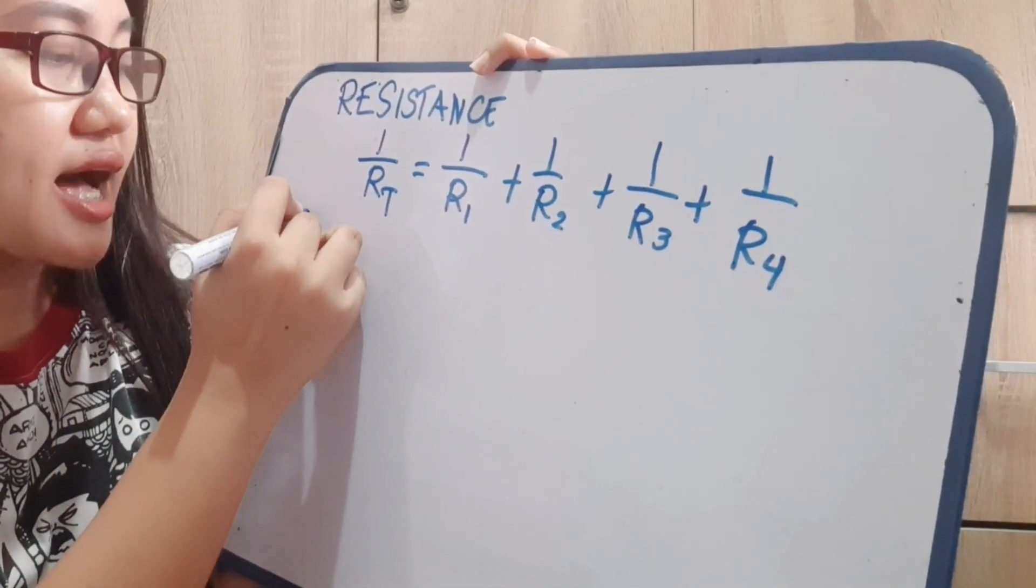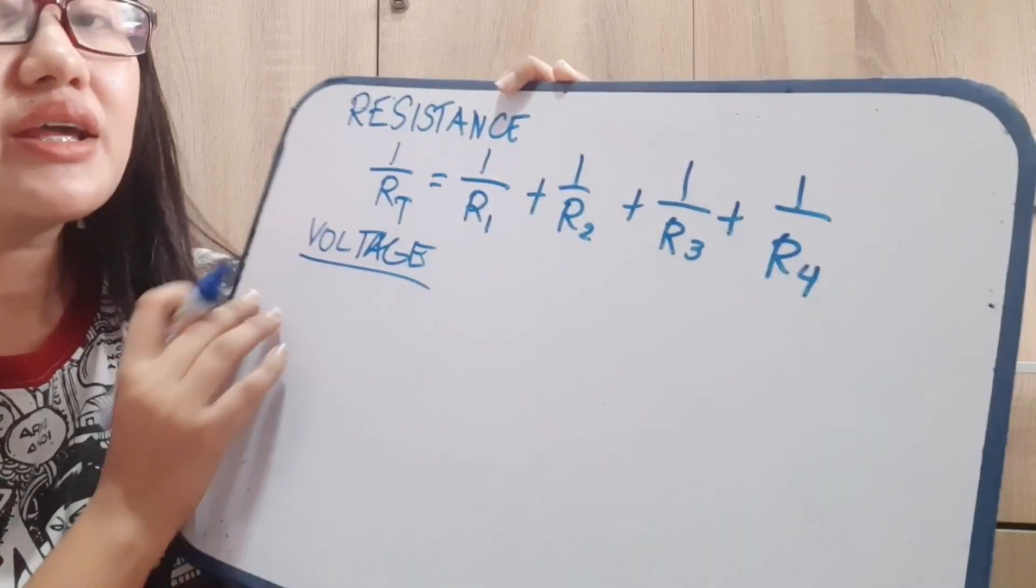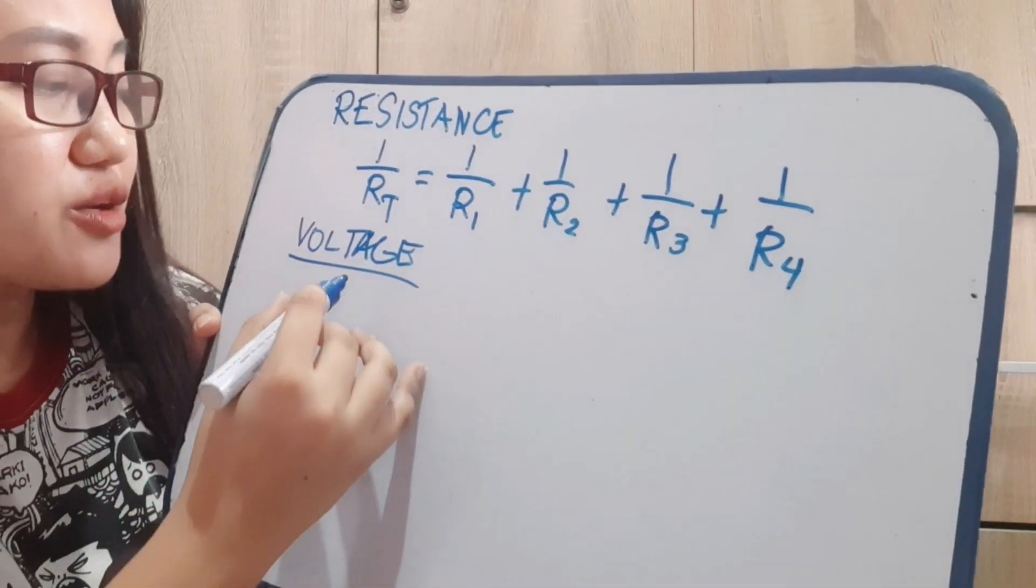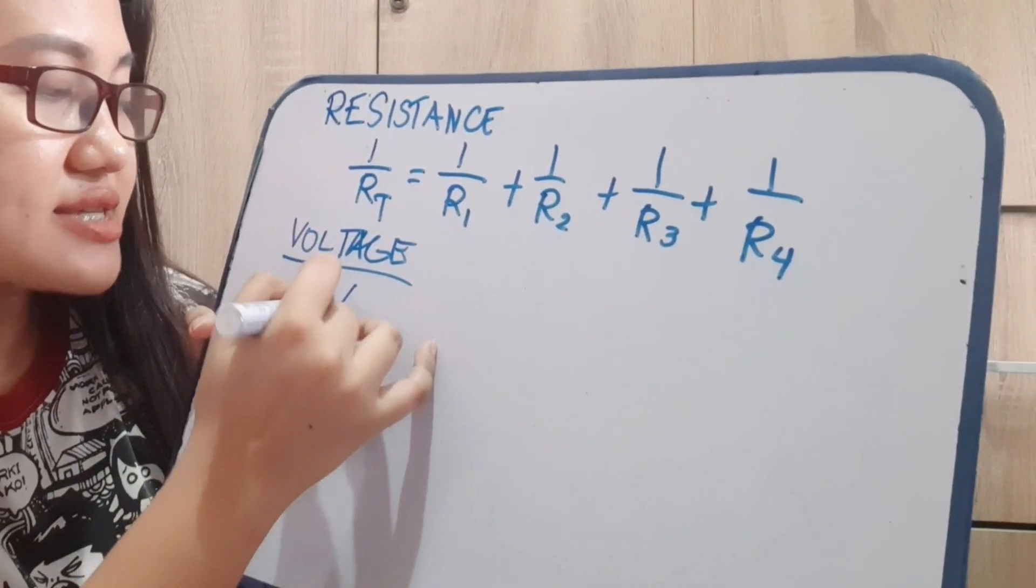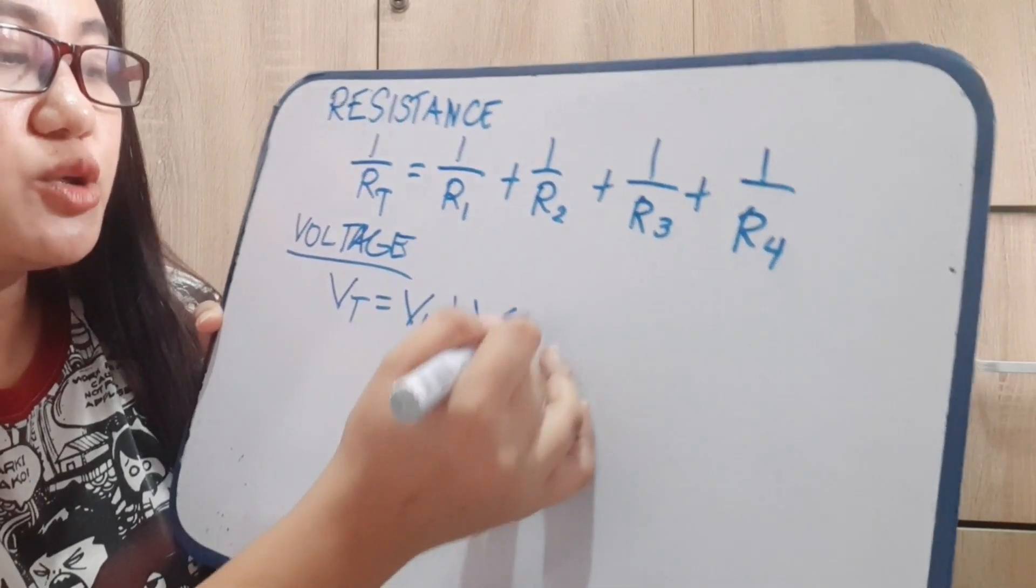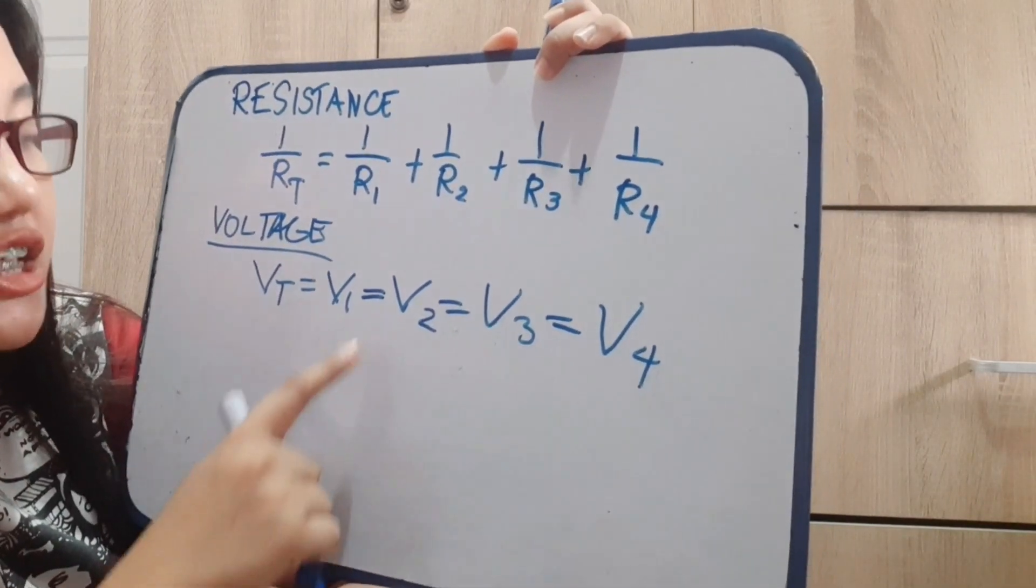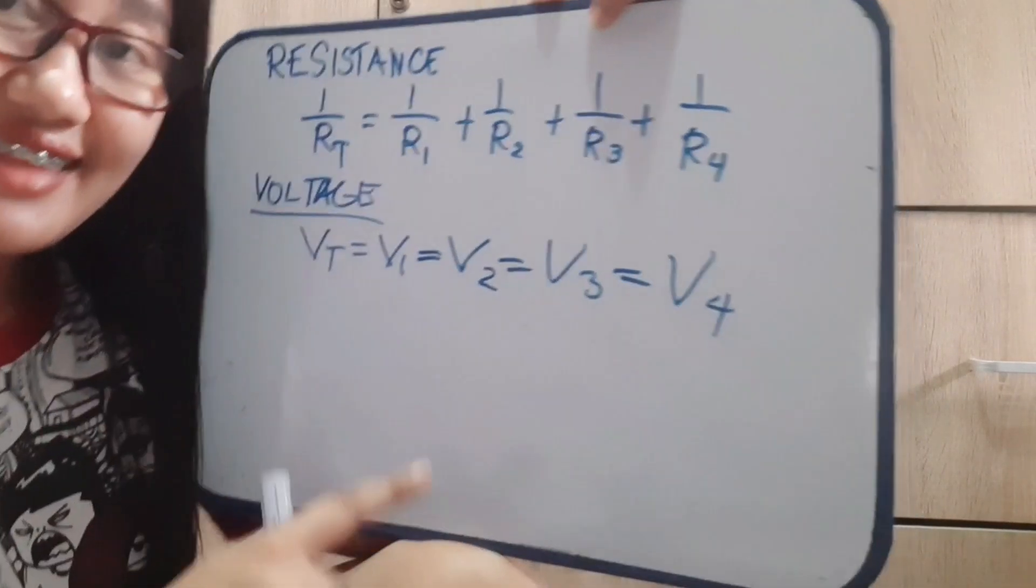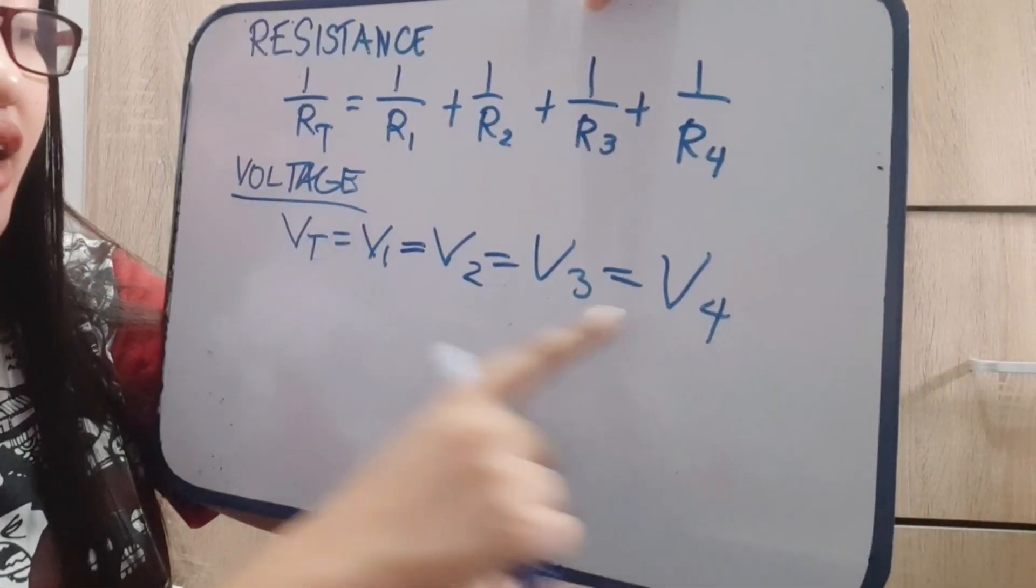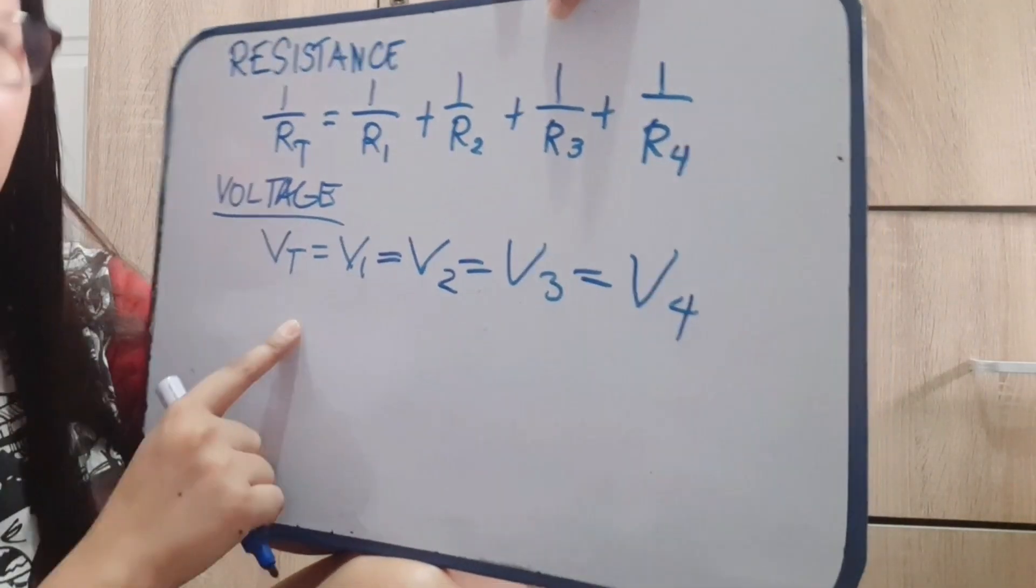For voltage, the formula for parallel circuit is the total voltage is also equivalent to V1. The total voltage is equivalent to the voltage of 1, 2, 3, 4. It means even if you total them, the total is equivalent to each voltage of each bulb.